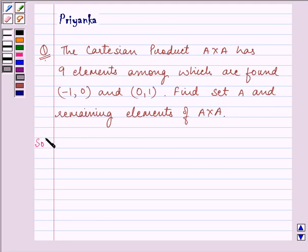Let us start with our solution and write down what is given to us. It is given that the number of elements in A×A is 9, and a few ordered pairs are given to us in the question.